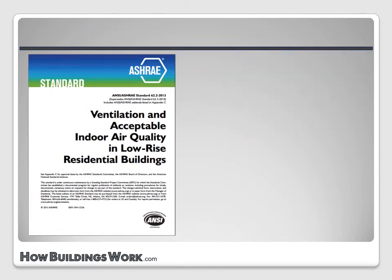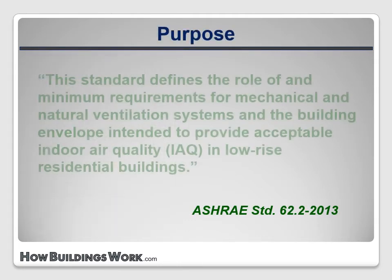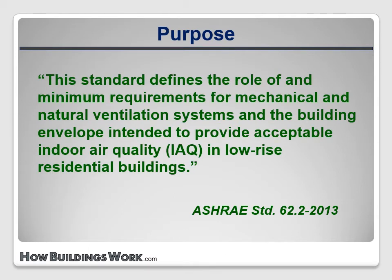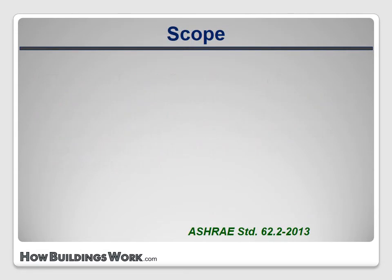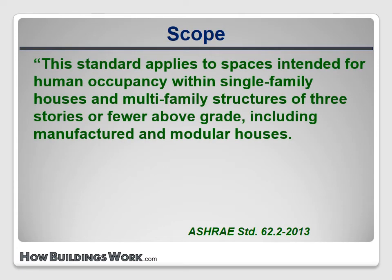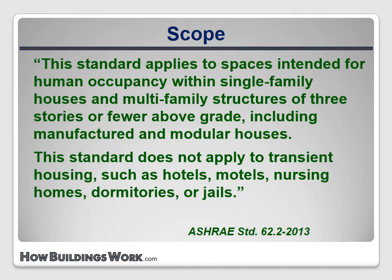Here are some quotes directly from the 2013 version of Standard 62.2. The purpose states that this standard defines the role of and minimum requirements for mechanical and natural ventilation systems and the building envelope intended to provide acceptable indoor air quality (IAQ) in low-rise residential buildings. The scope states that this standard applies to spaces intended for human occupancy within single-family houses and multi-family structures of three stories or fewer above grade, including manufactured and modular houses. This standard does not apply to transient housing such as hotels, motels, nursing homes, dormitories, or jails.